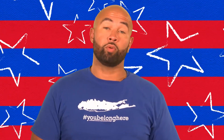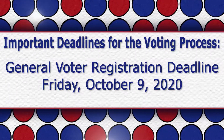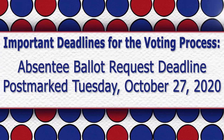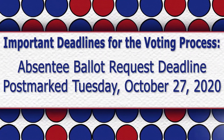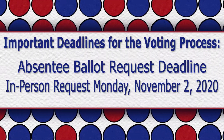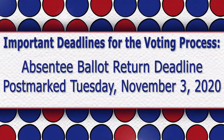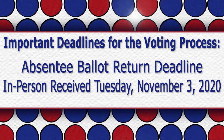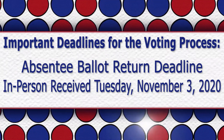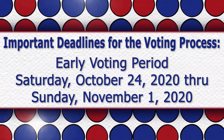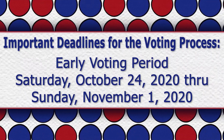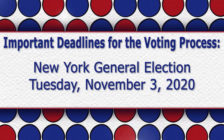If you're someone who's planning to vote — and I hope you are — it is essential that you keep these important dates in mind. The general voter registration deadline is Friday, October 9th. The absentee ballot request deadline must be postmarked by Tuesday, October 27th, or can be requested in person by November 2nd. Your absentee ballot must be postmarked by Tuesday, November 3rd, or must be received at your polling location or the Board of Elections in person by Tuesday, November 3rd. The early voting period is Saturday, October 24th through Sunday, November 1st. The New York general election is Tuesday, November 3rd.